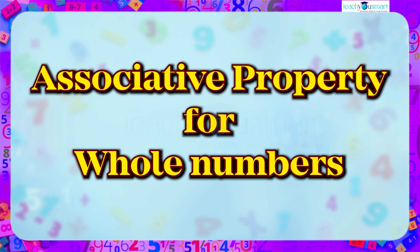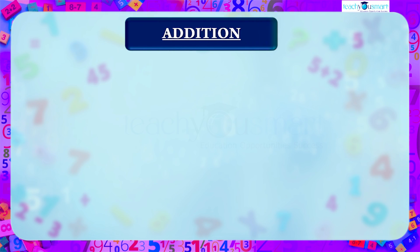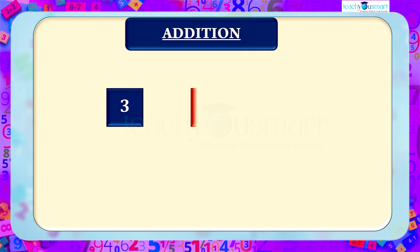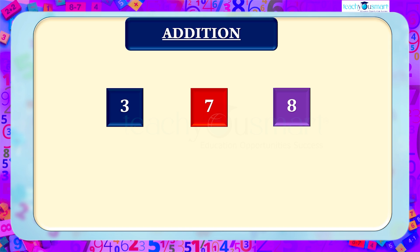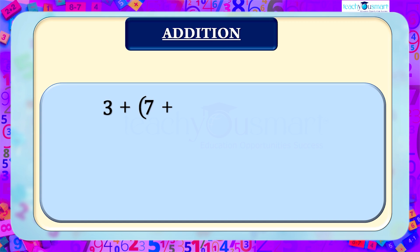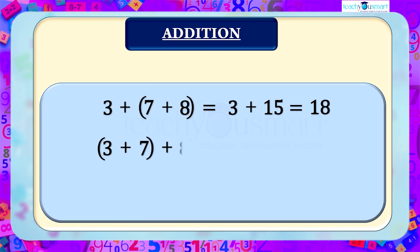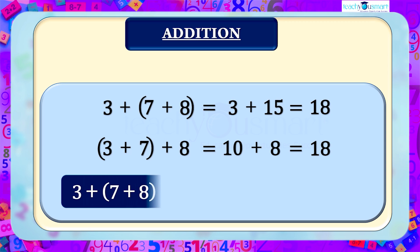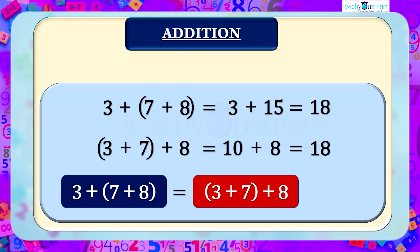First, let's look at the associative property for whole numbers — we will start with addition. Take three whole numbers: 3, 7, and 8. When adding these whole numbers, we can group them as either (3 + 7) + 8 = 10 + 8 = 18, or 3 + (7 + 8) = 3 + 15 = 18. The results are the same regardless of the grouping of the operation.